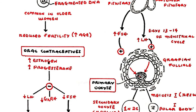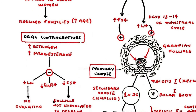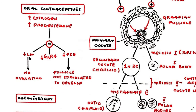High levels of estrogens and progesterone inhibit gonadotrophin releasing hormone and subsequently luteinizing hormone and follicle stimulating hormone. Decreased levels of FSH mean that the follicle is not stimulated to develop, and the absence of an LH surge prevents ovulation from occurring.